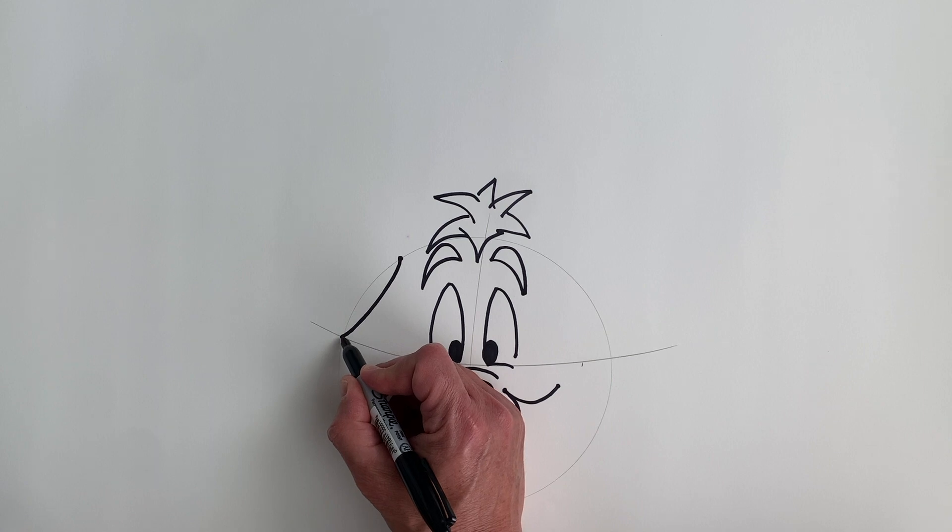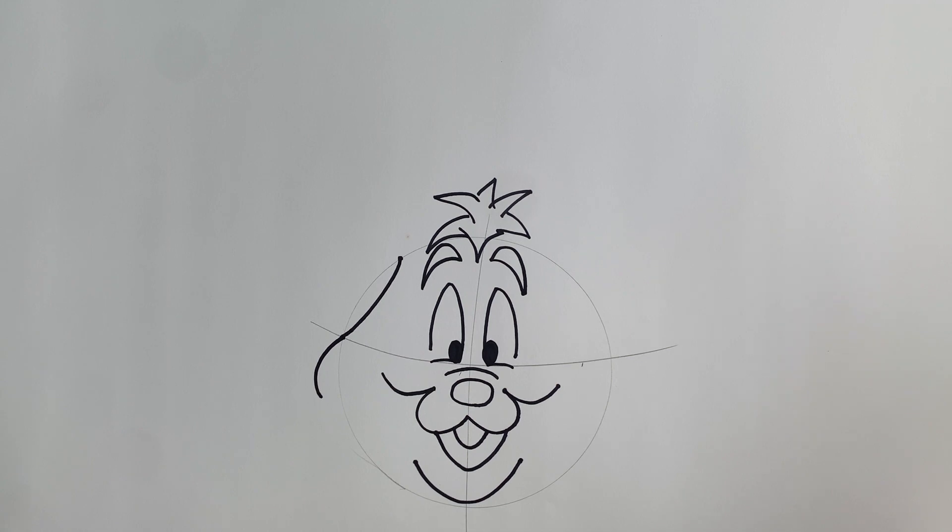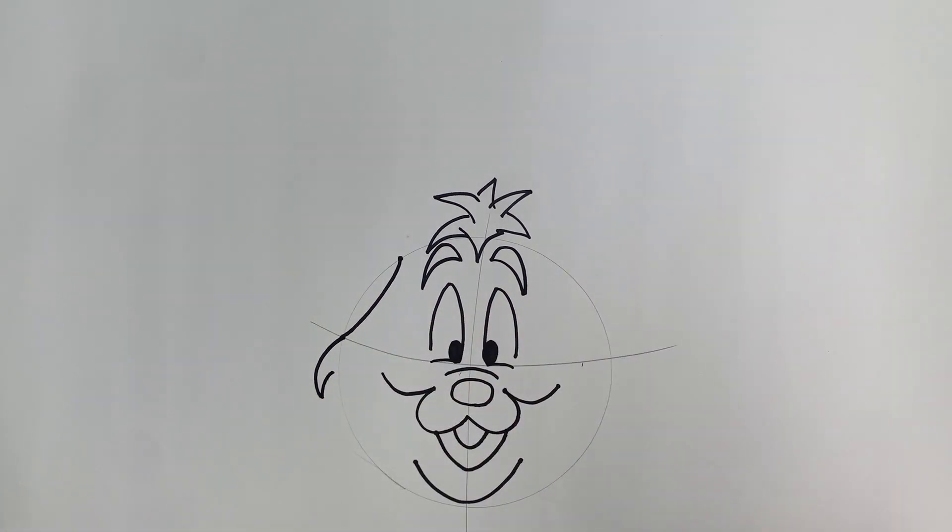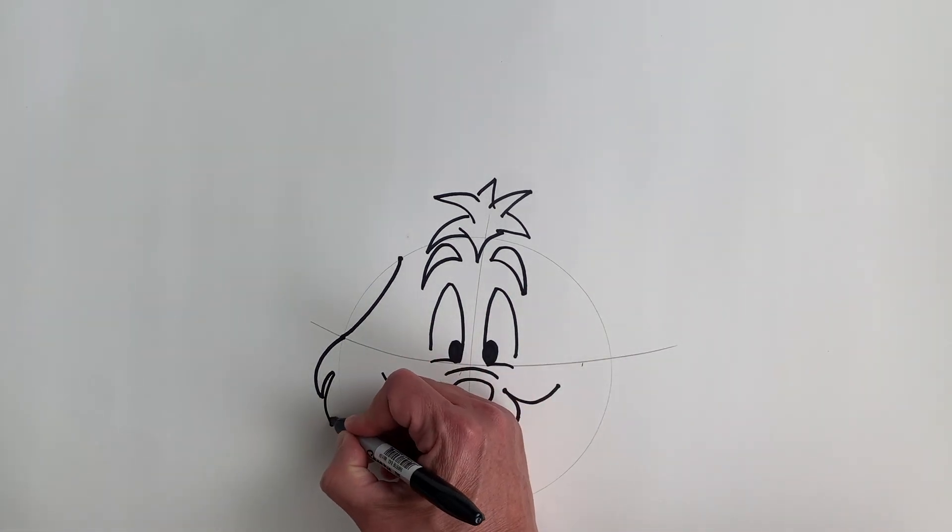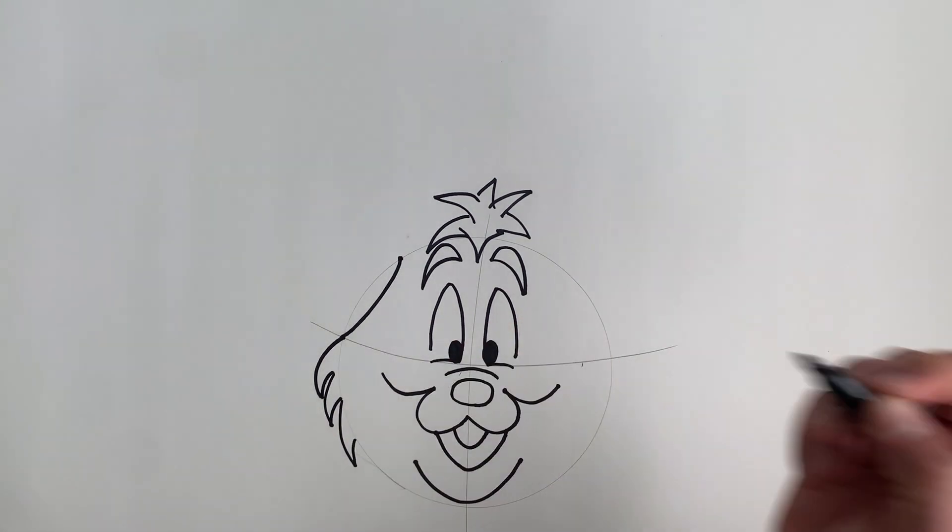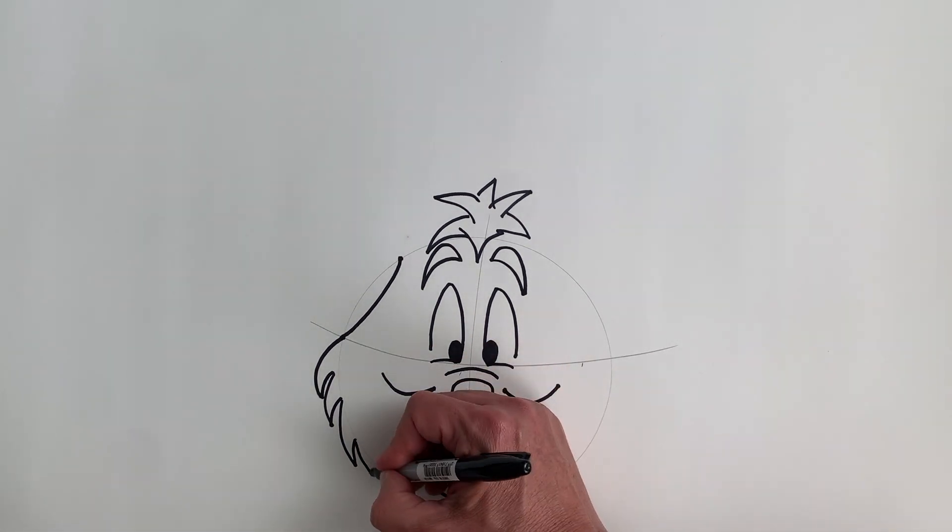Pen or pencil right over here. A little curve and stop. Go back up. Curve. Go back up. Curve. Go back up. On the line of the circle. And let's do one more. Back up.